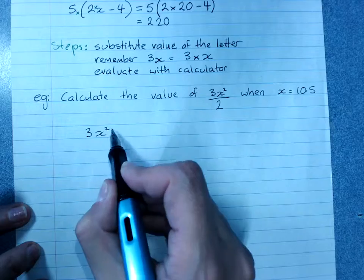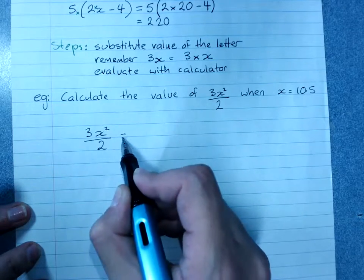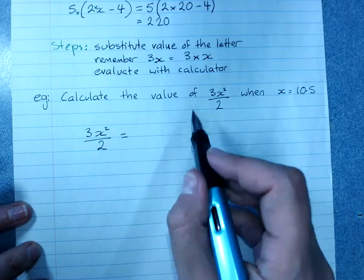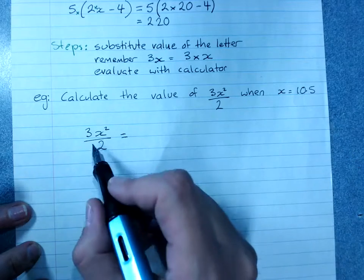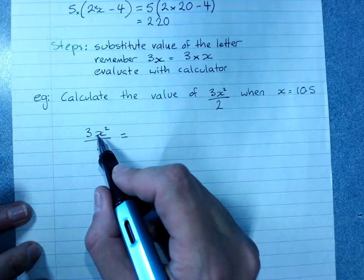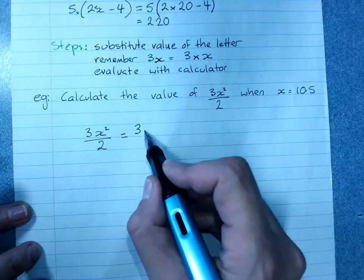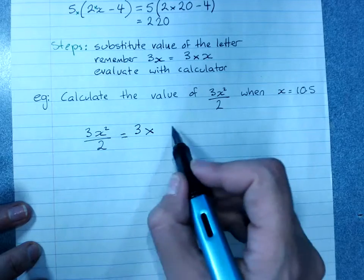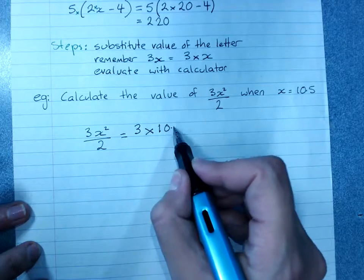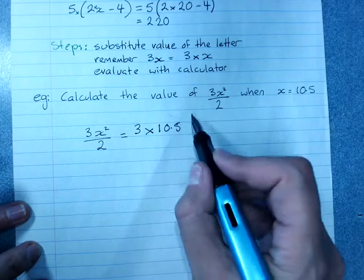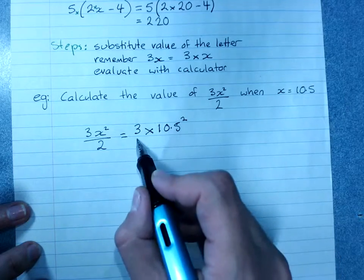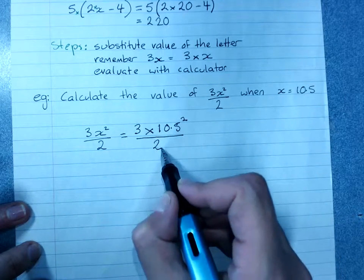Write the expression. Put our equals sign. Rewrite it with the correct value in here. Now remember, this is 3x. That will be 3 times. Substitute in 10.5. I've got to square that. And then I've got to divide all that by 2.